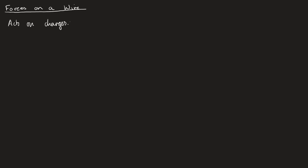To introduce this, we're first going to state what the formula is. Now, a lot of you will have already seen this formula from GCSE, and it is that the force is equal to B times I times L. Some people call this the Bill equation. We have to define what each of these things mean. Force is pretty obvious - F is the force. B is not so obvious, so B is known as the magnetic flux density.